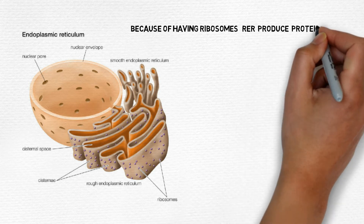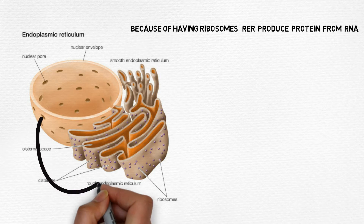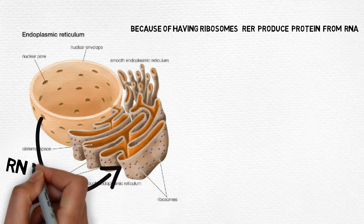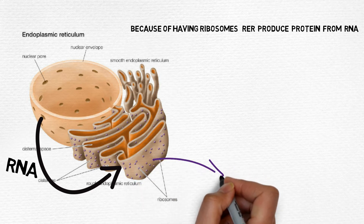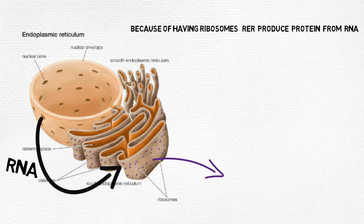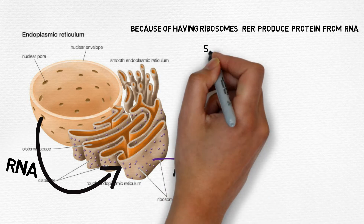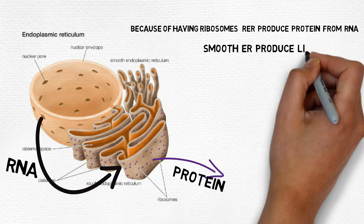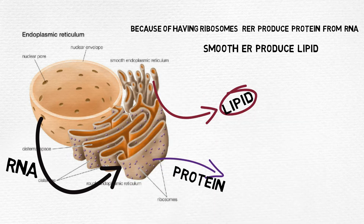Because of having ribosomes on the rough endoplasmic reticulum, protein is produced — RNA from the nucleus goes to the rough endoplasmic reticulum to form protein. Eukaryotic ribosomes are of the 80S type, made of two subunits: 60S plus 40S. Smooth endoplasmic reticulum helps in the production of lipids. So lipid and protein are both synthesized by the endoplasmic reticulum.